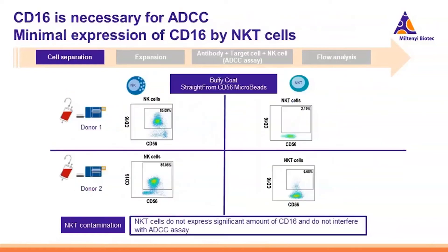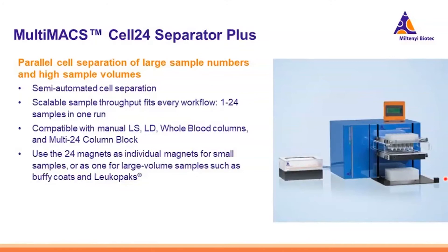Another important consideration is that NKT cells may be present in your assay. However, remember that for the ADCC, CD16 is responsible for recognizing the Fc region of the antibodies bound to the cancer cells. We can observe in two donors where cells were isolated with buffy coat StraightFrom CD56 microbeads: looking at NK cells versus NKT cells, the NK cells are CD16-positive, whereas the NKT cells only express CD16 at a minimal level. Therefore, you can assume that NKT cells, which do not highly express CD16, should not interfere with your ADCC assay. Using the MultiMACS Cell 24, you can get your cells rapidly in a semi-automated process directly from whole blood, buffy coat, or LeucoPak.